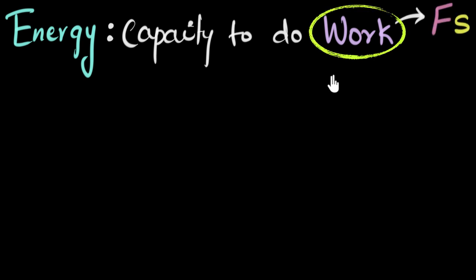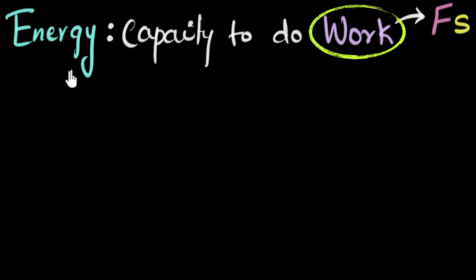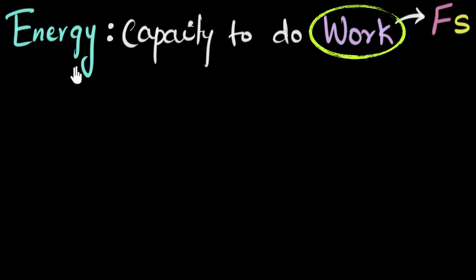In physics, work is the force acting on an object multiplied by the displacement of that object. This means to do work, you need to push on something and make it move. So this statement is basically saying that anything that can do work has something called energy. So if you can do work, you have energy. That's the basic idea — anything that can push an object and make it move must have energy.